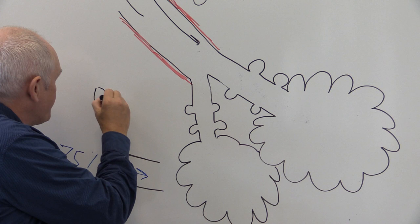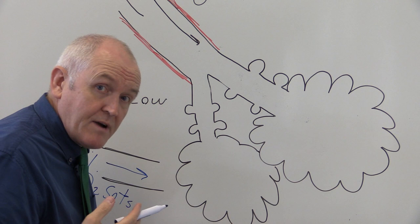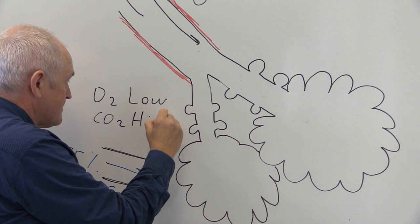Because this blood has been around the body and is being pumped back to the lungs by the right side of the heart, the carbon dioxide is going to be relatively high. So blood is approaching low in oxygen but high in carbon dioxide.